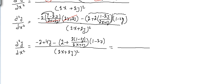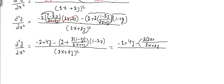The answer will be minus 2 plus 4y, minus 2 plus... let's take a common factor here. The common factor is (2x + 2y), so we have 2 times (2x + 2y) plus 2 times (1 - 2y), and all of those multiplied with (2x + 2y) squared.